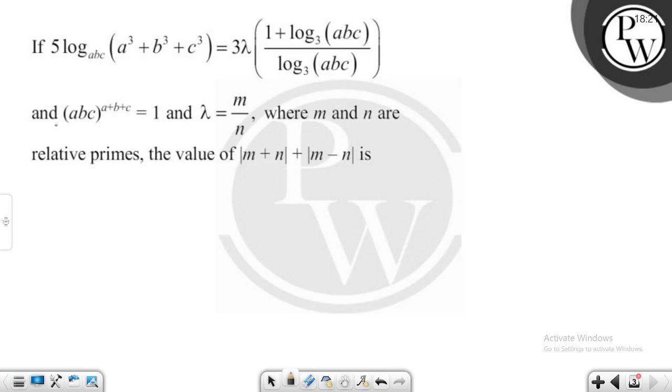And (abc)^(a+b+c) = 1, and λ = m/n where m and n are relatively prime, then the value of |m+n| + |m-n| is equal to what.